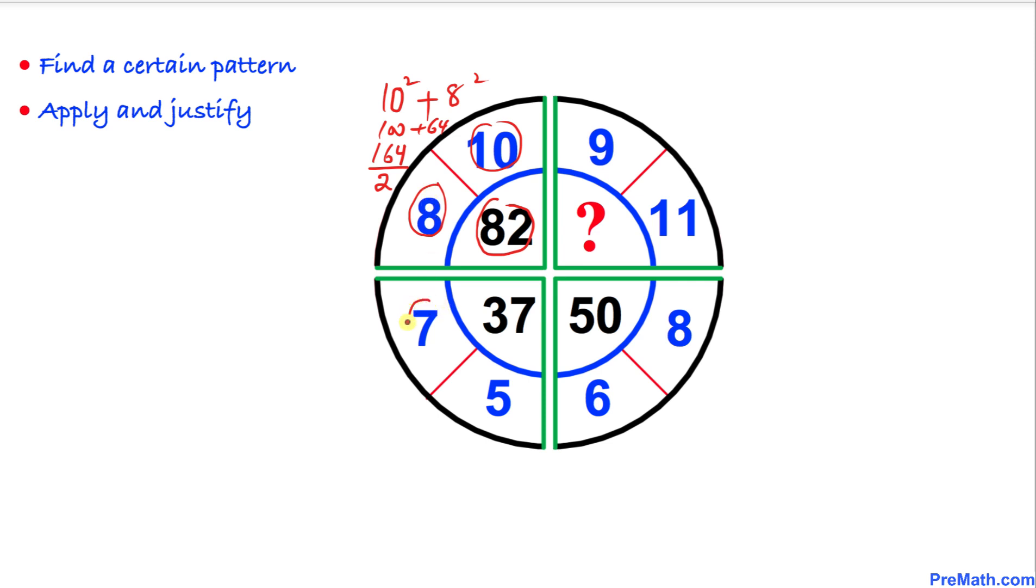Likewise over here 7 square is 49 and 5 square is 25. If we add them we are going to get 74. Once again we are going to divide it by 2. So that is number 37 we are going to get.